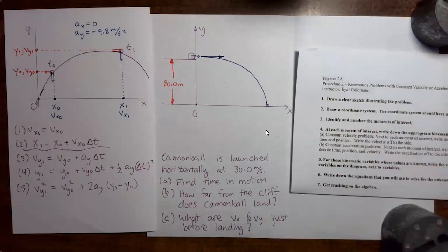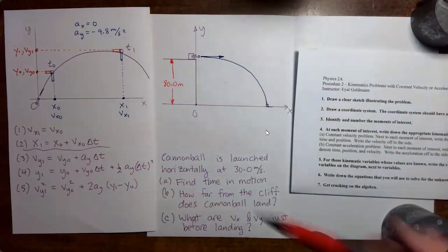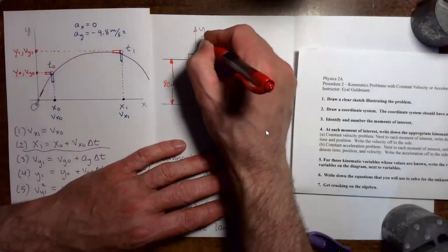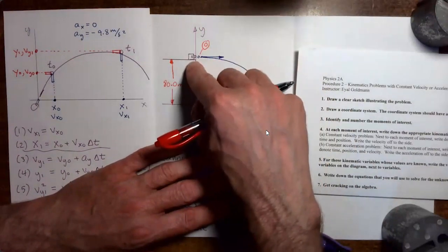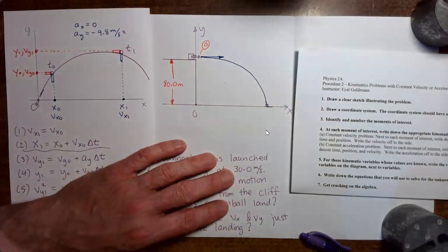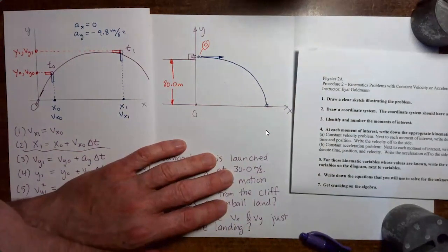Step three, identify a number of the moments of interest. In this problem, there are just two moments of interest. So moment of interest zero would be just after the launch. Remember, we don't put the moment of interest during the launch. We want to restrict ourselves to the part of the process which is freefall motion.